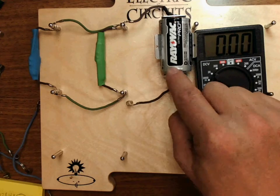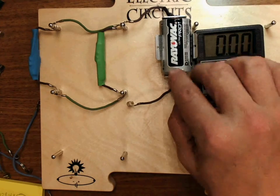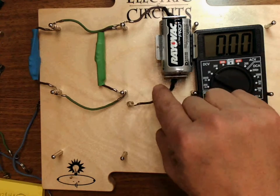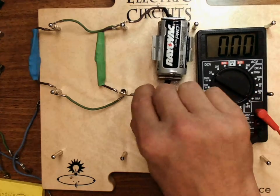The current is going to exit through the positive end of the battery. We know in reality the electrons come out of the negative end, but conventional current is designed to come out of the positive end. I haven't hooked it up yet, so I'm going to hook it up now.